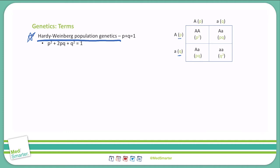And then secondly, P squared plus 2PQ plus Q squared equals 1.